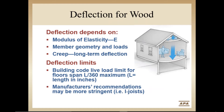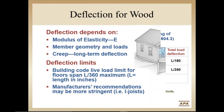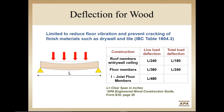While building code deflection limits are the same for all materials and spans, APA and many of its member companies recommend more stringent deflection limits for I-joist floor framing. Floor joists in general are more susceptible than heavier beams to vibration caused and felt by occupants. And I-joists in particular can span further than conventional floor joists. More stringent deflection limits help to ensure acceptable performance over longer floor joist spans. Building codes limit deflection in order to reduce floor vibration, increase occupant comfort, and to prevent cracking of more brittle finished materials such as tile, plaster, and drywall.